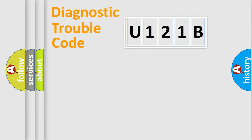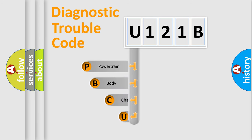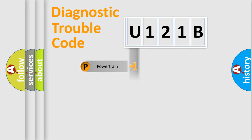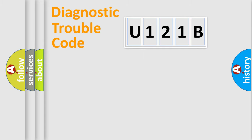Let's look at the history of diagnostic fault code composition according to the OBD2 protocol, which is unified for all automakers since 2000. We divide the electric system of an automobile into four basic units: Powertrain, Body, Chassis, and Network.